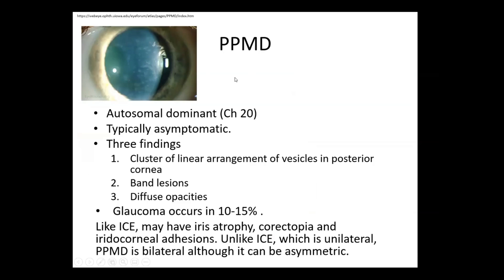The last endothelial dystrophy is PPMD — posterior polymorphous dystrophy. It looks very much like ICE syndrome. The key difference is that ICE syndrome affects only one eye, whereas PPMD is bilateral. Like ICE, it can have iris atrophy, correctopia, and iridocorneal adhesions because it's so posterior that it touches the iris — but ICE is unilateral and PPMD is bilateral.